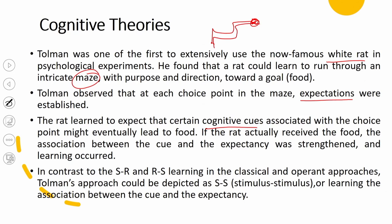In contrast to the stimulus-response and response-stimulus learning of classical and operant conditioning respectively, Tolman's approach could be depicted as a stimulus-stimulus type of understanding. We are not talking about a specific reward at the moment the learning association happens — the association is between the cue and the expectancy. When the cue and expectancy match and the rat finds food, that will trigger behavior and aid the rat to perform similarly in future. This is where cognitive theories are very critical in learning.